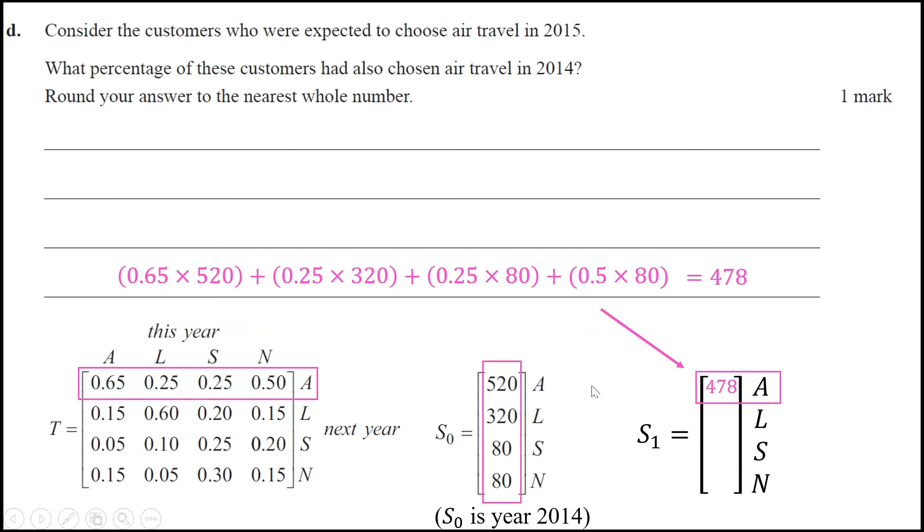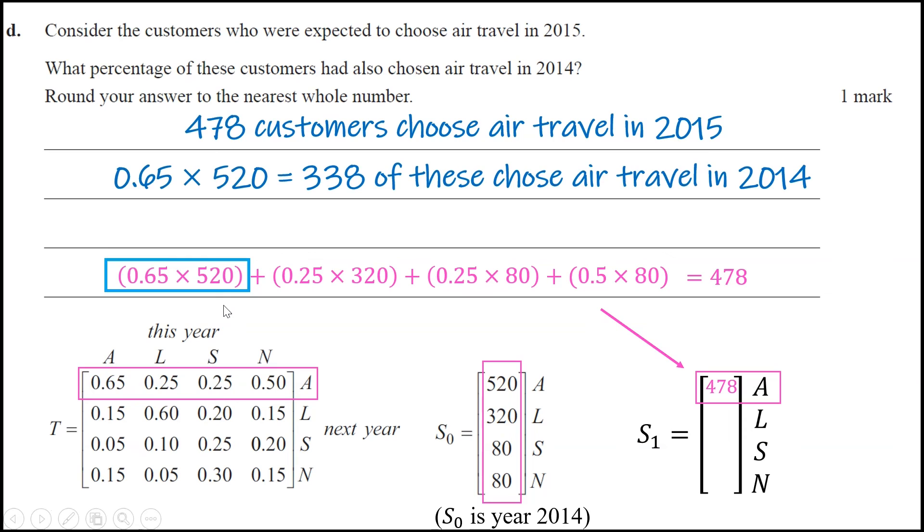Well, in S0 they're going to be here, but it's not all of those 520. It's only 0.65 of 65% of them. Okay, so of those 478, 65% of them, which is 338, would have chosen air travel in 2014. And then we calculate the percentage by dividing.